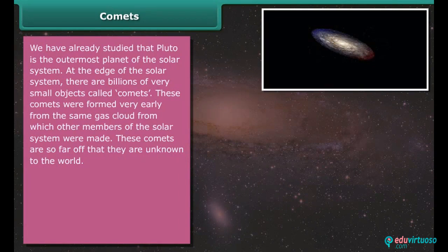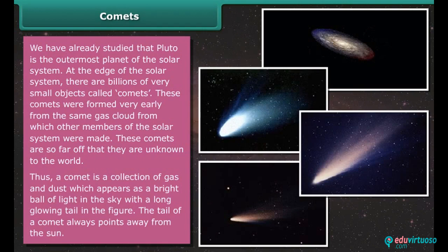We have already studied that Pluto is the outermost planet of the solar system. At the edge of the solar system, there are billions of very small objects called comets. These comets were formed very early from the same gas cloud from which other members of the solar system were made. These comets are so far off that they are unknown to the world. Thus, a comet is a collection of gas and dust which appears as a bright ball of light in the sky with a long glowing tail. The tail of a comet always points away from the sun.